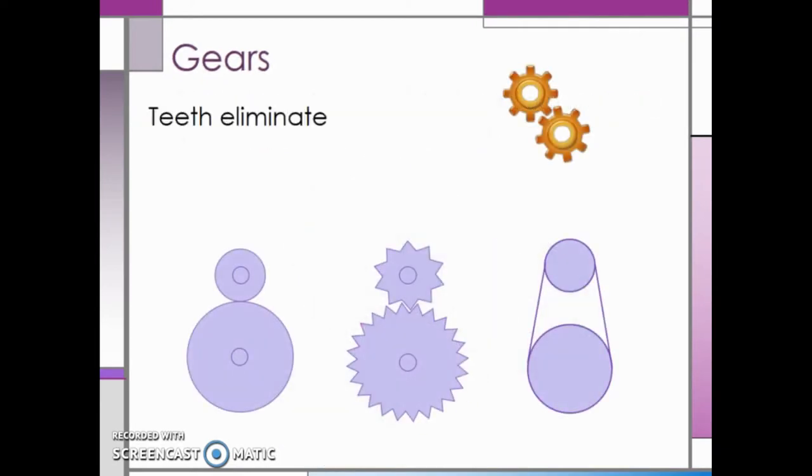Most gears have teeth. These teeth help eliminate slippage between the gears. Without teeth on gears, there would be a lot of slippage. Imagine how much slippage there would be in a transmission if the gears didn't have teeth.